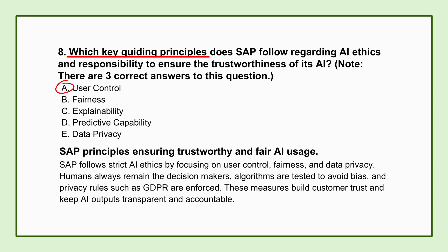The second core principle is fairness. The models have to be designed and rigorously tested specifically to avoid systemic bias through careful data selection, ongoing monitoring, and testing to make sure the AI treats all users, all transactions, and all data subjects equitably. The goal is to prevent discriminatory or uneven outcomes that might arise from biases hidden in the training data.